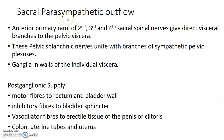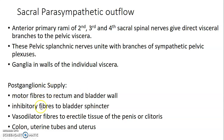The S2, S3, and S4 spinal nerves give direct visceral branches to the pelvic viscera, forming the pelvic splanchnic nerves that unite with branches of the sympathetic pelvic plexuses. The ganglia are located in the walls of individual viscera, and from these ganglia, postganglionic fibers provide motor fibers to the rectum and the bladder wall, inhibitory fibers to the bladder sphincter, vasodilator fibers to the erectile tissue of the penis and clitoris, and postganglionic fibers to the colon, uterine tube, and uterus.